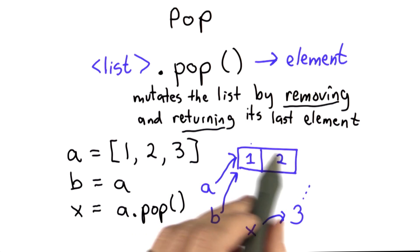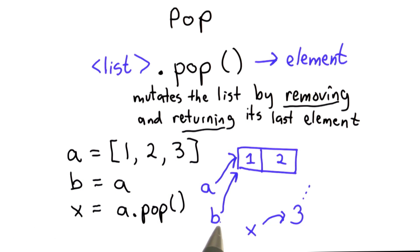So now a refers to the list [1, 2]. Since b was an alias for a, it also changed the value of b. b is now the list [1, 2].